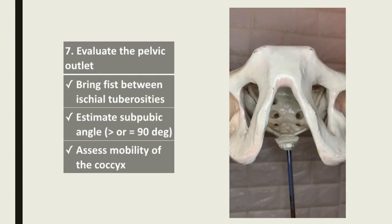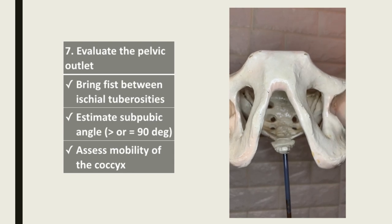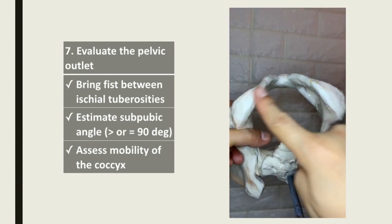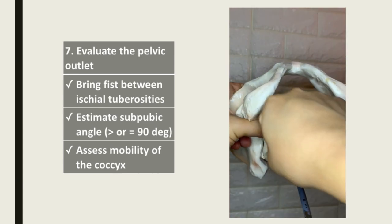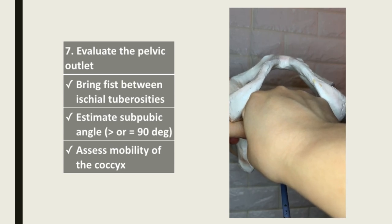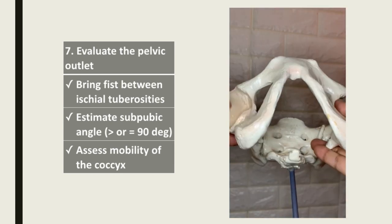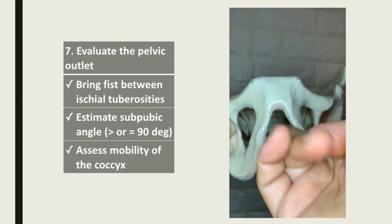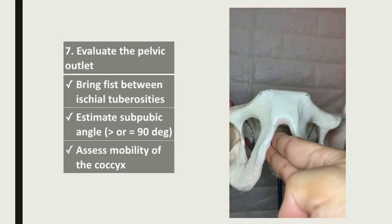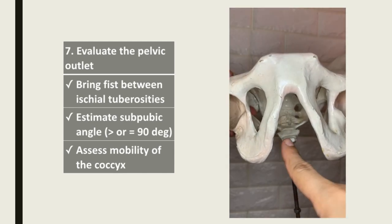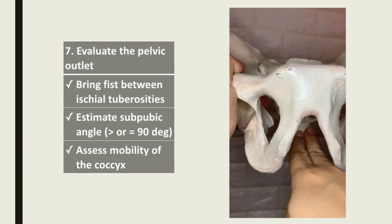Lastly, we evaluate the pelvic outlet by bringing our fist in between the ischial tuberosities. An adequate pelvic outlet should accommodate four knuckles. We also estimate the sub-pubic angle — an adequate pelvic outlet should measure at least 90 degrees or more. Finally, we assess the mobility of the coccyx.